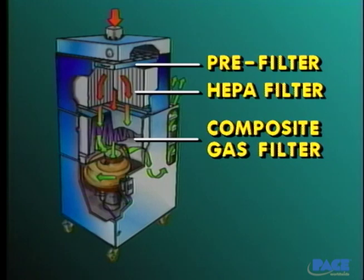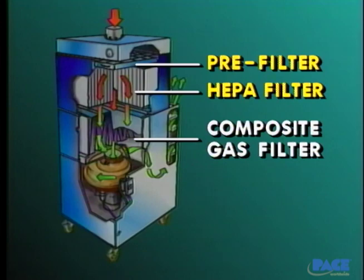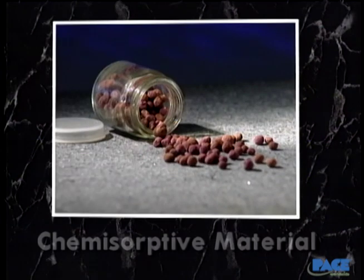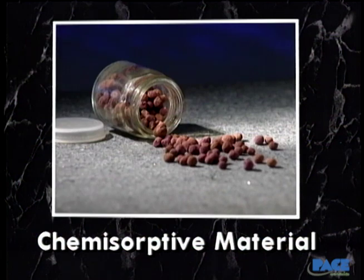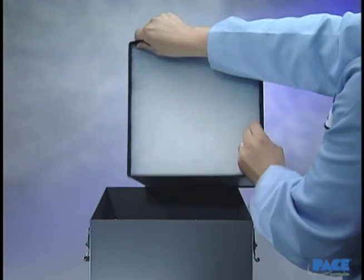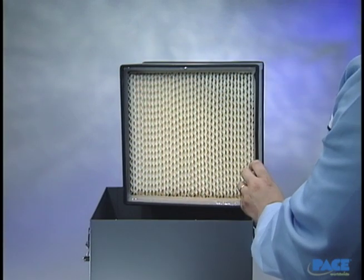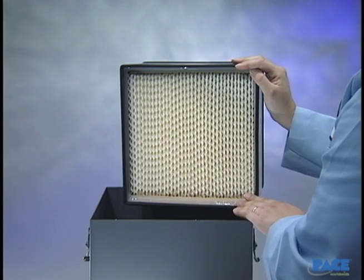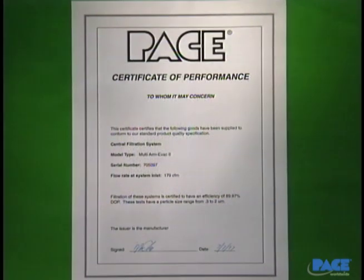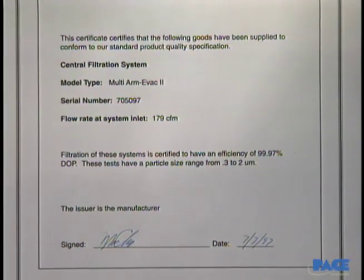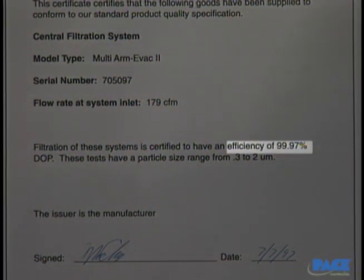Removal of gaseous and particulate components in flux fume requires an effective multi-stage central filtration system, which includes a pre-filter for removing coarse particles, a high efficiency particulate air filter or HEPA filter for removing microscopic particulates, and a composite blend gas filter for capturing the gases contained in flux fumes. A composite blend of an absorptive material and a chemisorptive material is preferred for effective performance. The surface area of the HEPA filter is also an important consideration. HEPA filters with large surface area require less frequent changes and offer lower resistance to air movement through the system. All quality HEPA filters will have a certificate of efficiency for assured performance. Filter efficiencies of 99.97% are available.